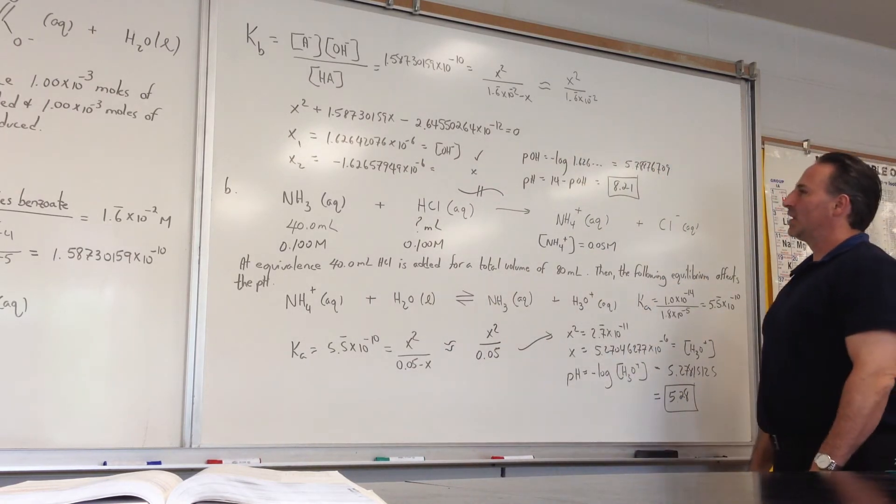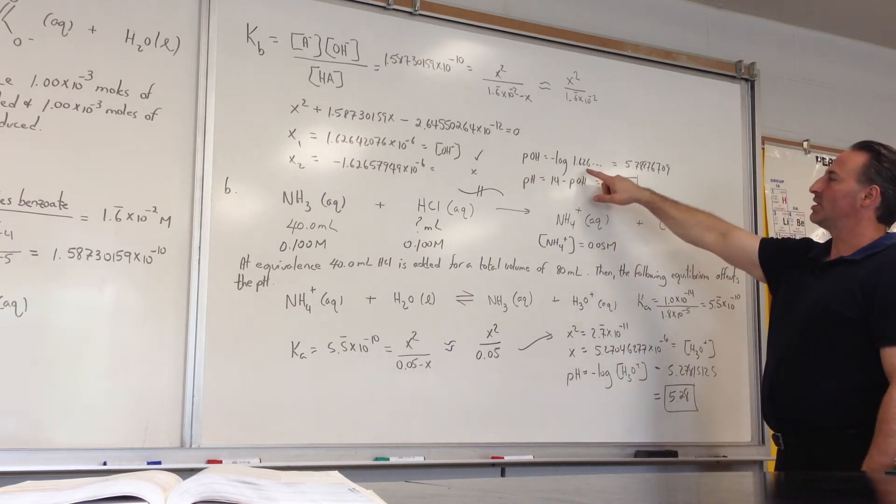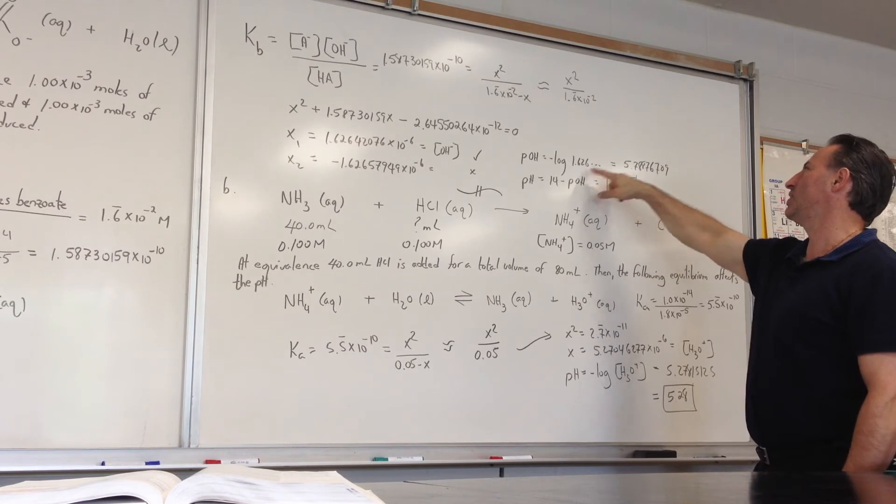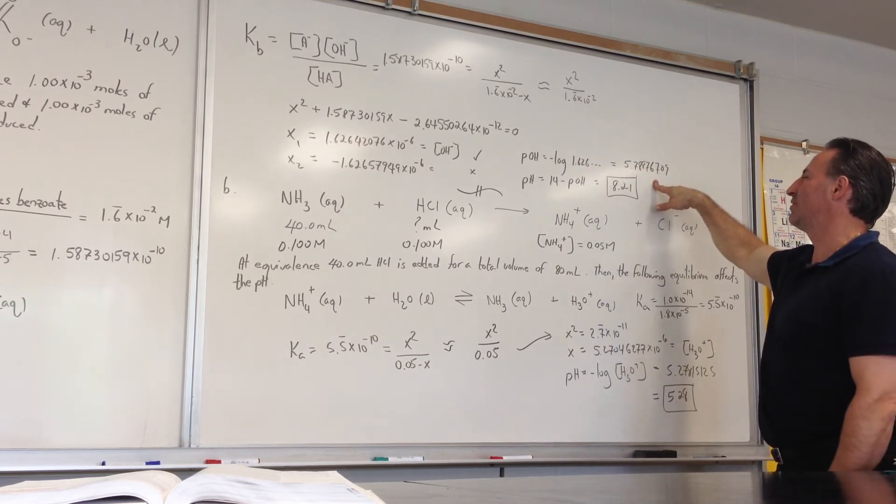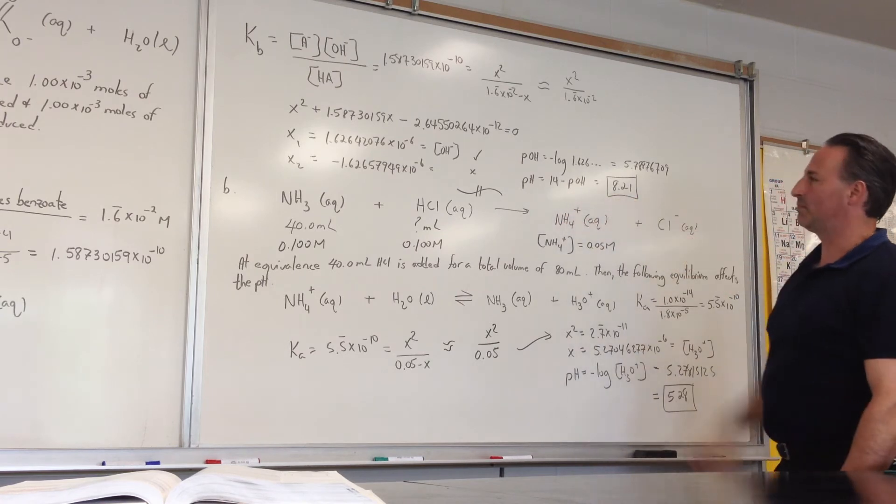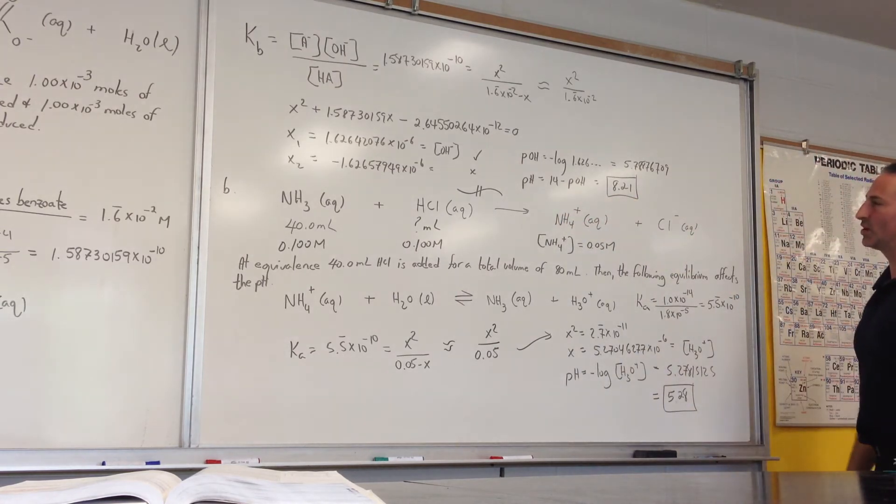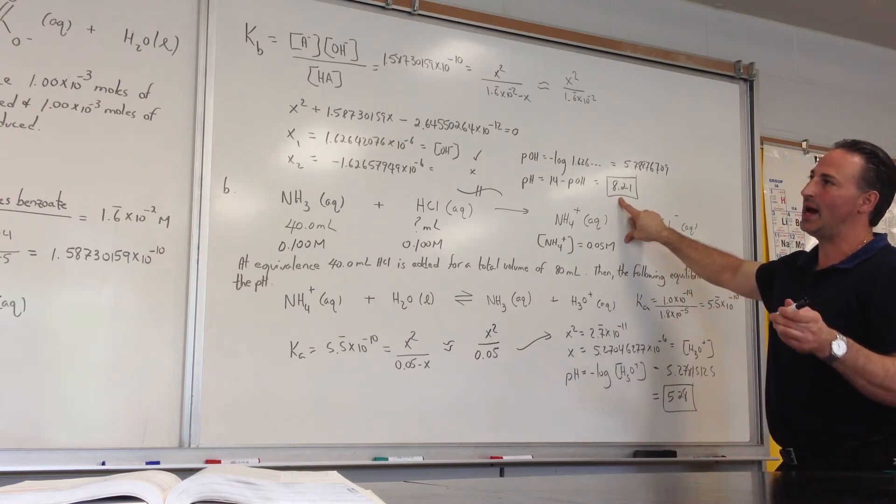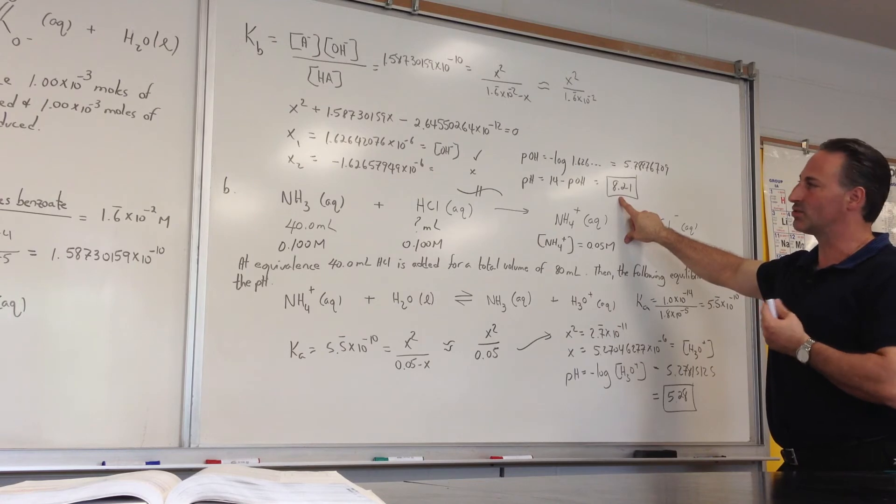We then plug in the hydroxide concentration into the pOH equation. pOH is equal to negative log of OH minus concentration. It gives you pOH of 5.78. And we convert that to a pH by subtracting it from 14. We get a pH of 8.21. So you can see that the presence of the conjugate base of a weak acid basifies the solution ever so slightly. It gives a pH of 8.21.